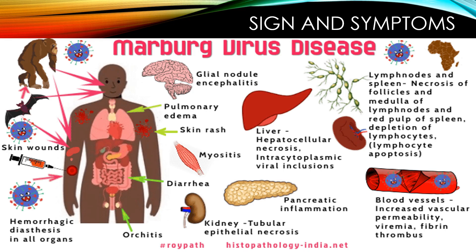In the kidneys, there can be tubular epithelial necrosis. In the pancreas, it causes inflammation. The liver undergoes cellular necrosis. In the lymph nodes and spleen, there is necrosis of the follicles and medulla of the lymph nodes and red pulp of the spleen. In the blood vessels, there is increased vascular permeability, viremia, fibrin, and thrombus formation, causing hemorrhage in all these organs.